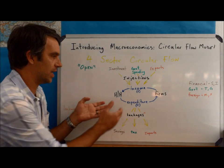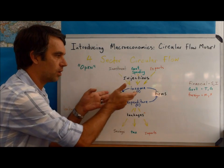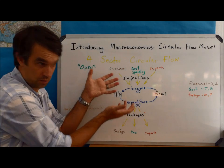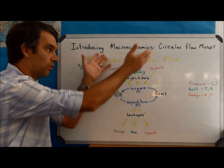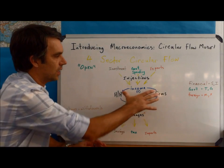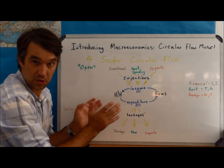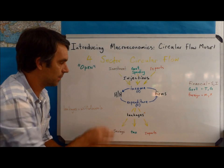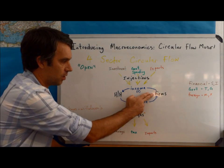It's open because now households and firms have other players to which money can go or from which money can come into the circular flow. So let's start with what we used with the two-sector circular flow and see how it relates to this. We still have households and firms.